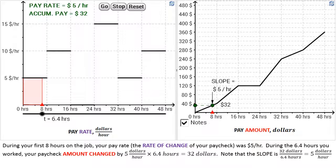So during your first eight hours on the job, your pay rate, which is the rate of change of your paycheck, was $5 per hour, which you can see in the left graph. So, suppose you worked 6.4 hours, your paycheck changes in amount by $5 per hour times 6.4 hours, and that gives you $32.